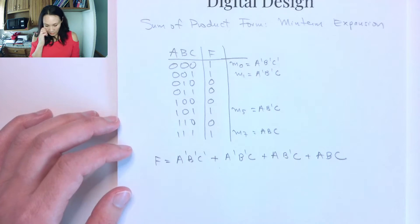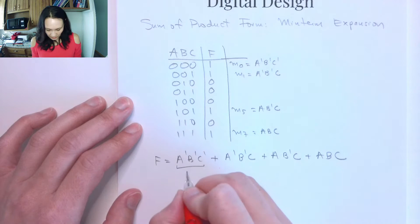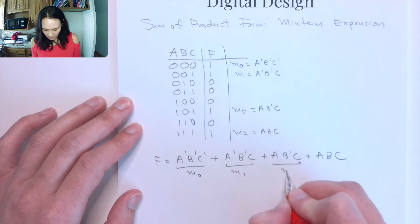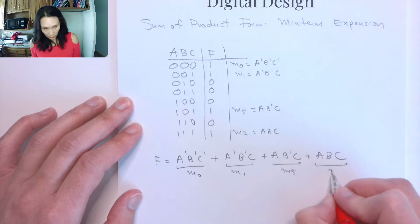So from here, we know that this is min-term 0, this is min-term 1, this is min-term 5, and this is min-term 7.